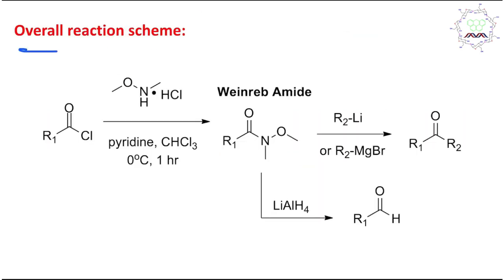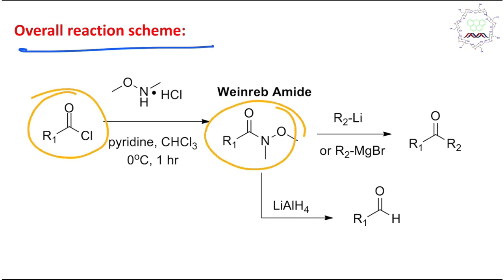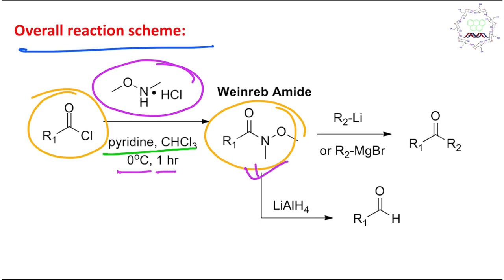The overall scheme is the conversion of acid chloride into the corresponding amide by acyl nucleophilic substitution. The hydroxylamine derivative is taken as its hydrochloride salt form because these derivatives are stable in that form. To get nucleophilic reactivity, quenching of this salt is essential. For that purpose, pyridine acts as a base in CHCl₃ as solvent at 0°C for one hour to produce this product.